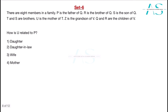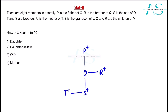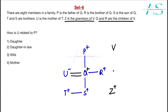Next: eight members in a family. P is the father of Q. R is the brother of Q. S is the son of Q. T and S are brothers, both male. U is the mother of T, making Q and U a couple — Q is the father. Z is the grandson of V. Q and R are children of V, making V their parent and the grandmother.